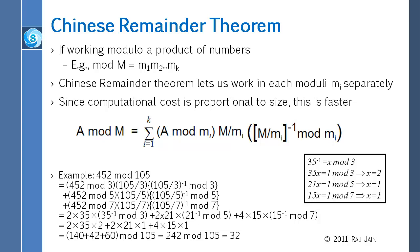You can calculate this whole thing beforehand, even this one beforehand. So every time the number a changes, all you do is compute a mod m1, a mod m2, a mod mk, and then for each of those numbers you multiply by this pre-calculated quantity. So let's try to do this. We want to find out what is 452 mod 105.